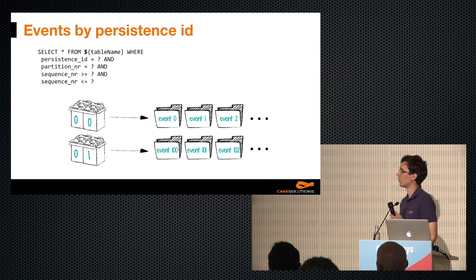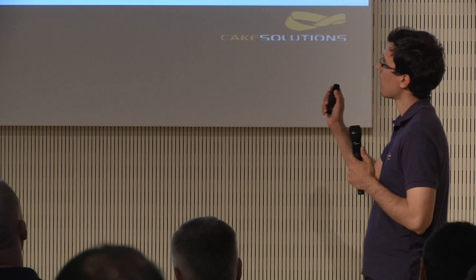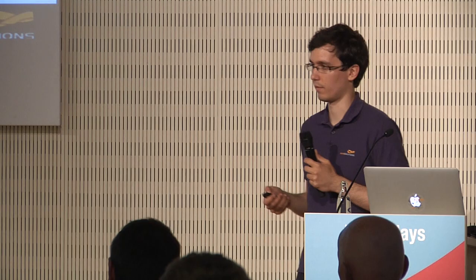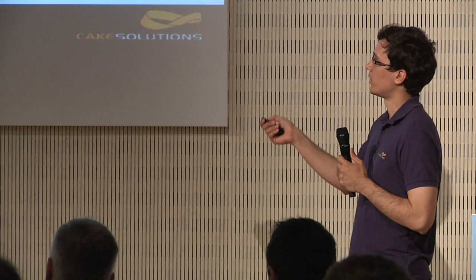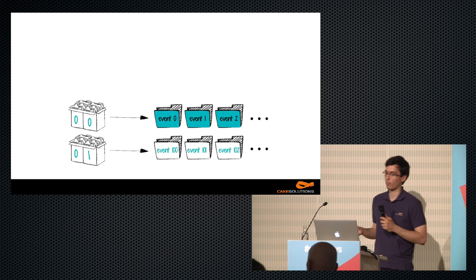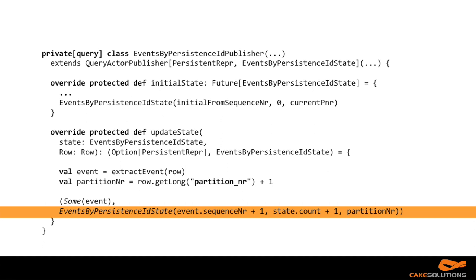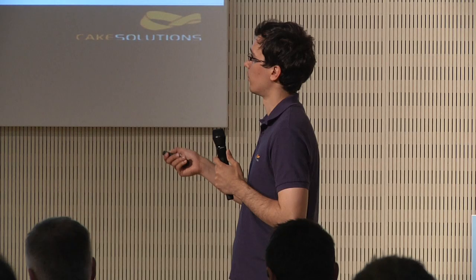Let's have a look at some of the implementations of this generic actor publisher. The first one is eventsByPersistenceId — the simplest, giving us events for a single persistenceId in the correct order. This is how the data are physically stored in Cassandra, and the query is exactly what we need: we specify both parts of the partitioning key and a range of sequence numbers. The query will very simply give us events in the correct order, very efficiently, because we go through a single partition or a couple of partitions — exactly what Cassandra does well. The important method is how we update the state: the code is very simple and efficient because we just remember a single sequence number, which increases by one every time we read a new event, and we remember the partition number.